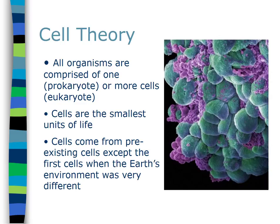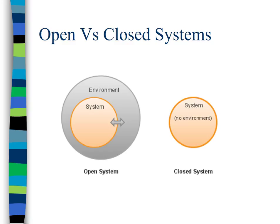Cells are an open system versus a closed system. That means cells interact with their surrounding environment. A closed system has no environment; there's no movement of things into or out of it. In a cell, which is an open system, there will be movement of nutrients in, and waste products out, as well as protein products manufactured in the cell destined for other cells or organs.